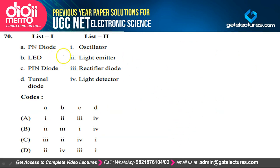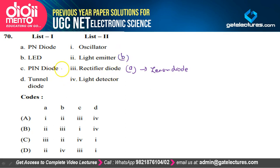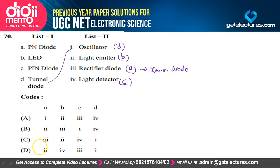Question 71: Matching PN diode types to applications — PN junction diode is used as a rectifier diode (A→3); LED is a light emitter (B→2); PN diode acts as a light detector (C→4); tunnel diode is used as a low-power microwave oscillator (D→1). Option C satisfies the explanation.